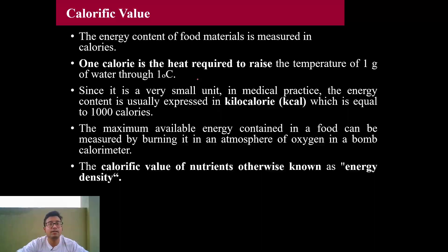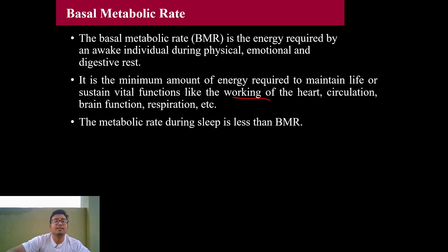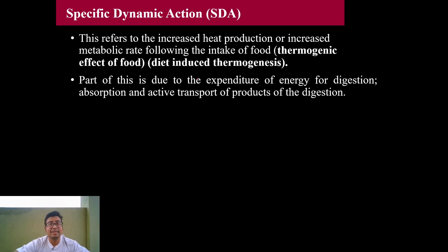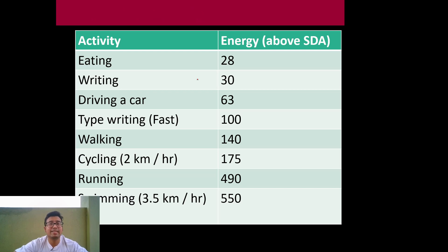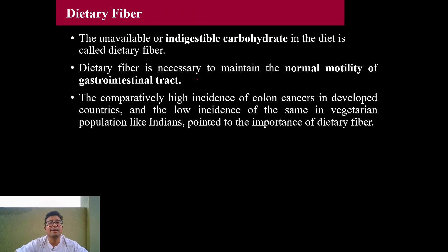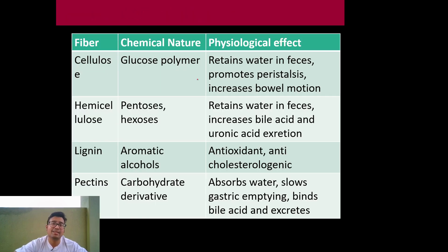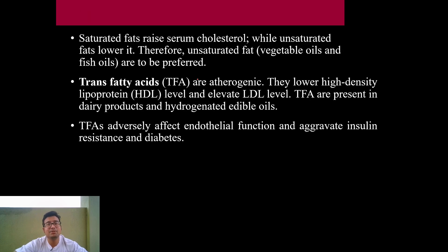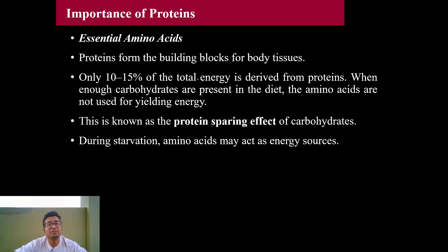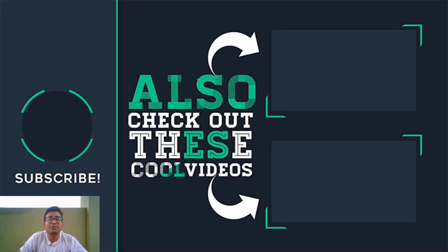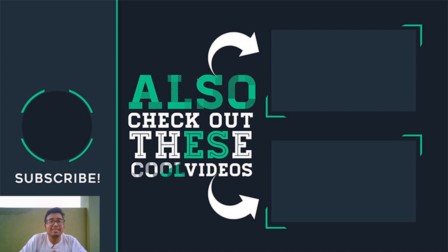To summarize today's overview of nutrition: we learned calorific value, respiratory quotient, specific dynamic action, basal metabolic rate, importance of dietary fiber, importance of trans fatty acids, and the RDA of proteins. Feel free to get back with any queries and I will see you in the next one — bye!